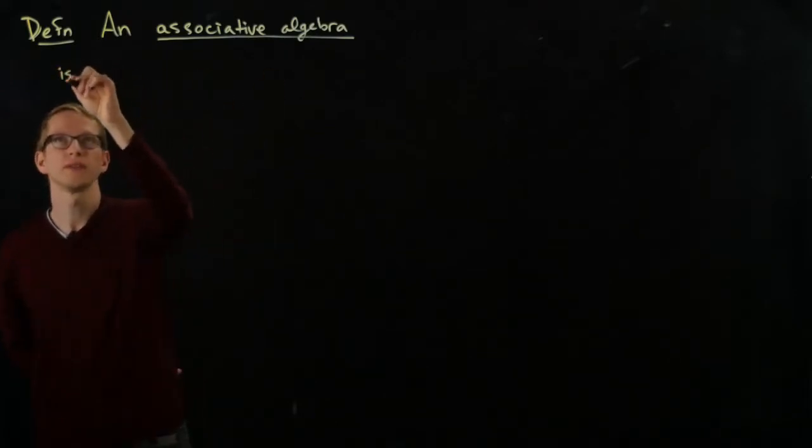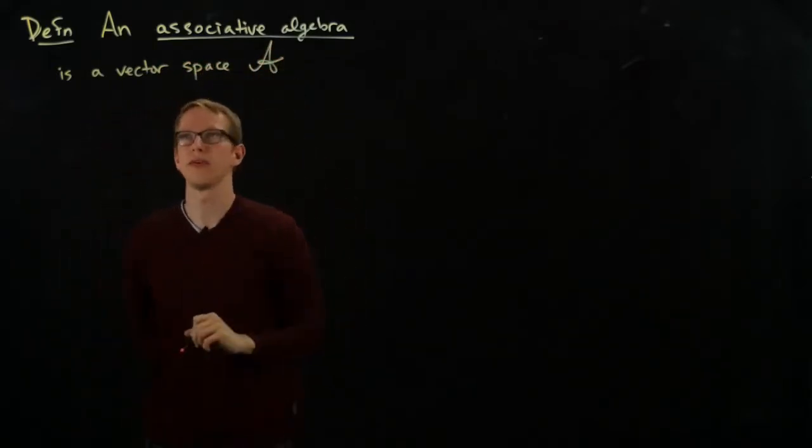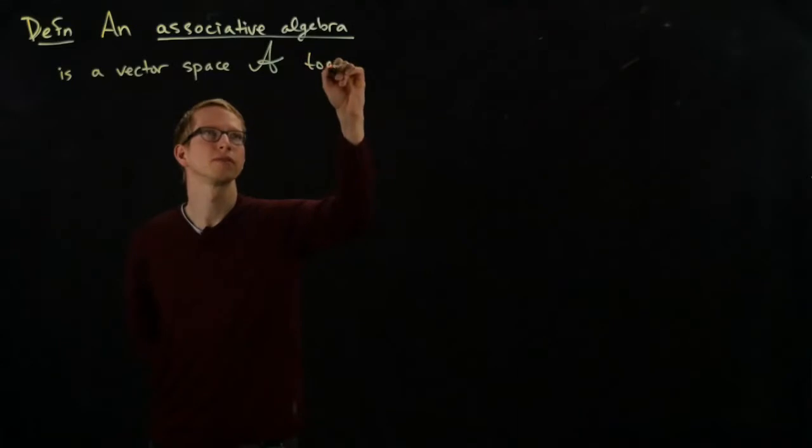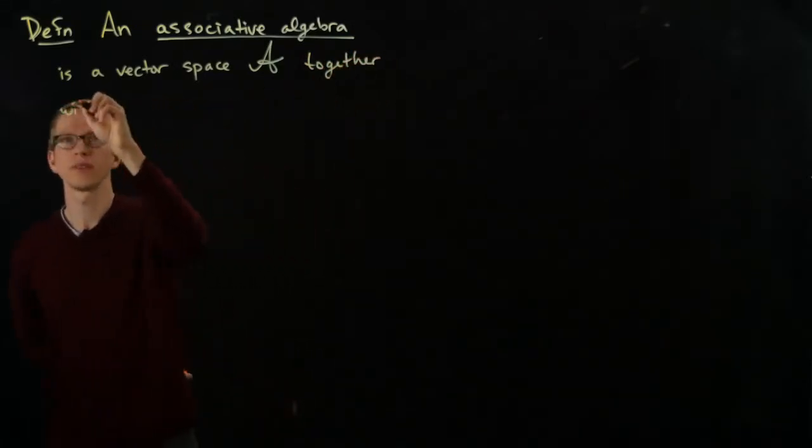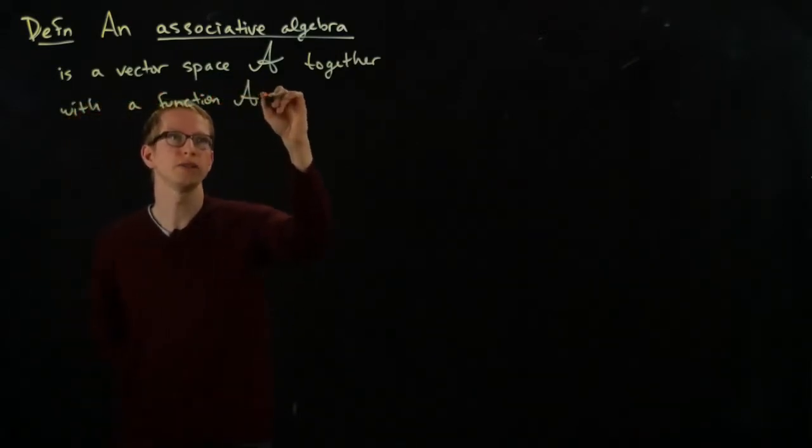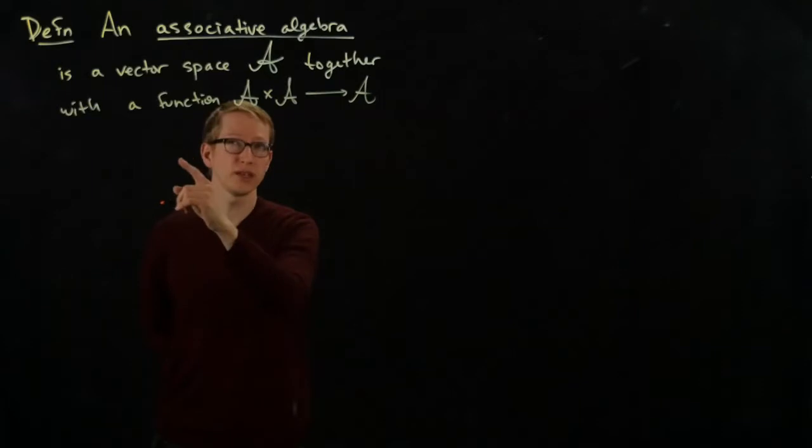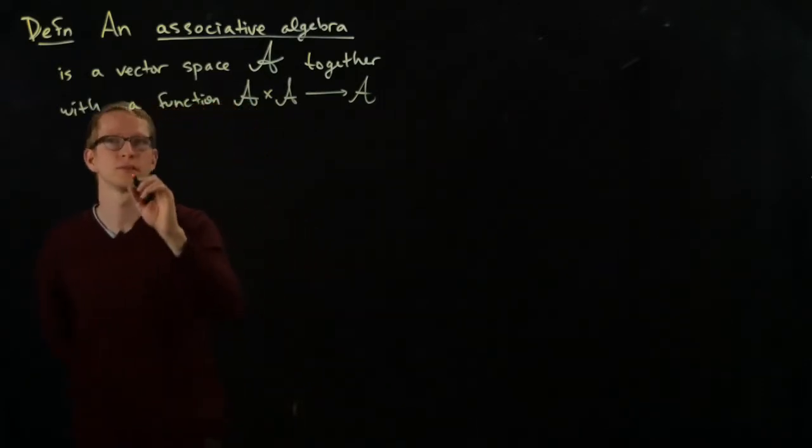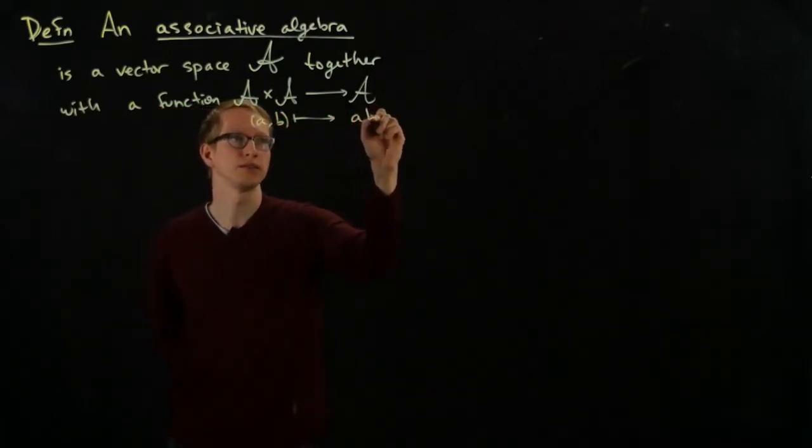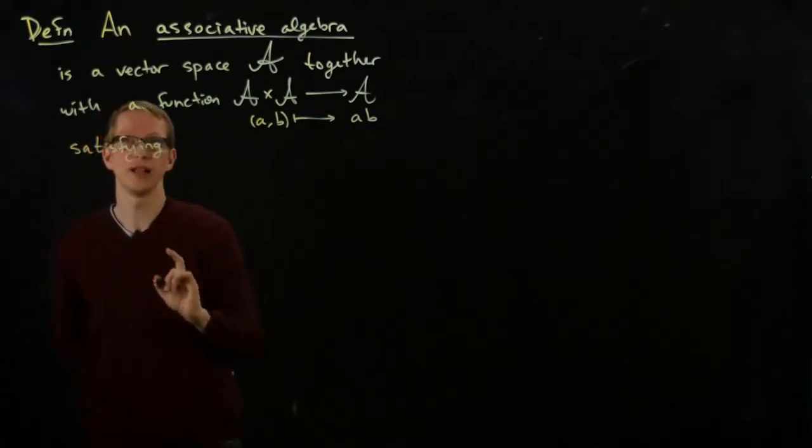An associative algebra is a vector space, and all of our vector spaces over real numbers for now. So, it's some vector space, and I'm going to call it A for algebra, together with a binary operation that takes two elements in your algebra, and it gives you another element in your algebra. And we think of this binary operation as the product of two elements. And in fact, we even write a comma b gets sent to a times b.